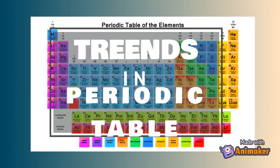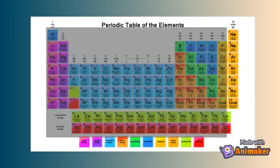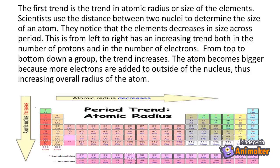What are the trends in the periodic table? The periodic table shows all the known elements and gives information such as the atomic number and symbols of each element. Elements follow a trend as they move left to right across a period or top to bottom down a group. This is known as periodic trends, and these trends are according to their properties and characteristics.